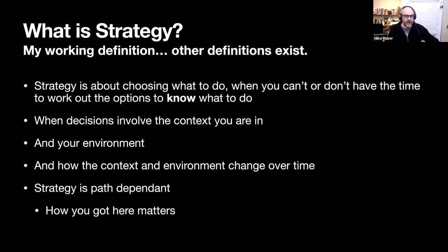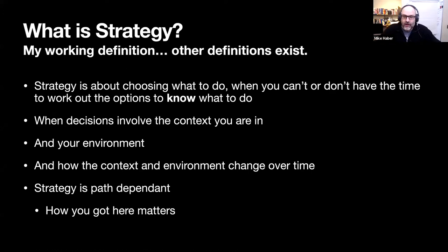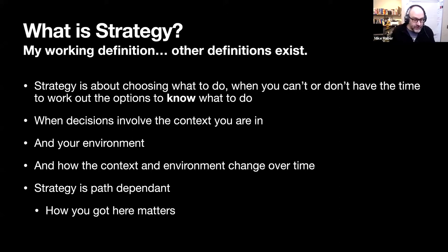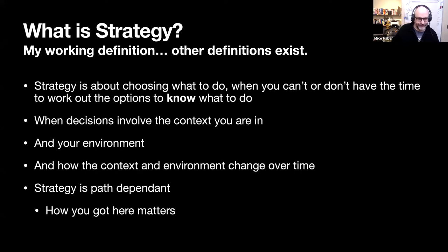I'm going to have to define what strategy is — this is my working definition; other definitions exist. For me, strategy is about choosing what to do when you can't easily work out the options or when to act. Strategic decisions often involve the context and environment you're in, and now the context and environment change over time. Strategy is also path dependent — how you got here matters. If you have options A and B and you do A first then B, you might get a different outcome than if you did B first then A.